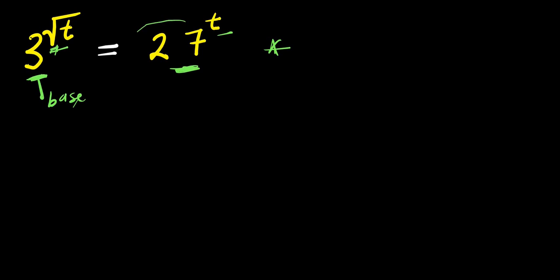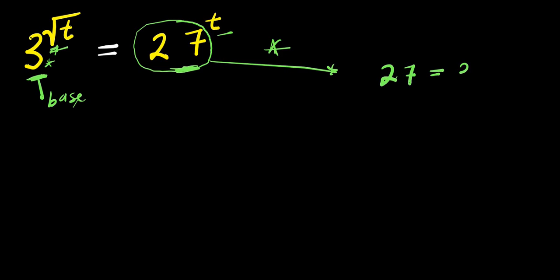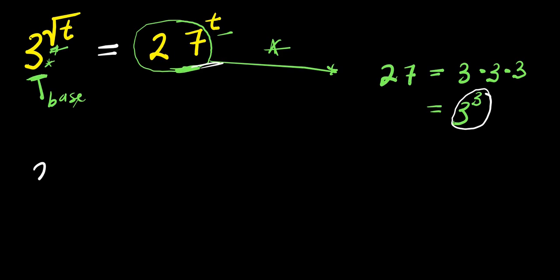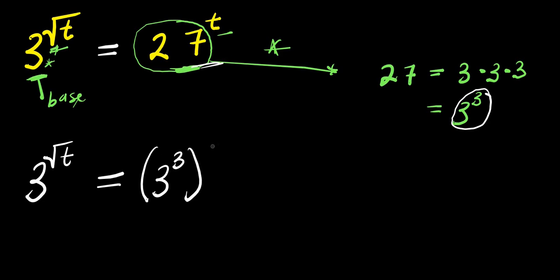We have 27 here. We need to express this 27 in terms of 3. To achieve that, note that 27 is the same as 3 times 3 times 3, which is 3 to the power of 3. So instead of writing 27, we replace it with 3 to the power of 3. We now have 3 to the power of square root of t equals 3 to the power of 3, which is 27, and this is raised to the power of t.